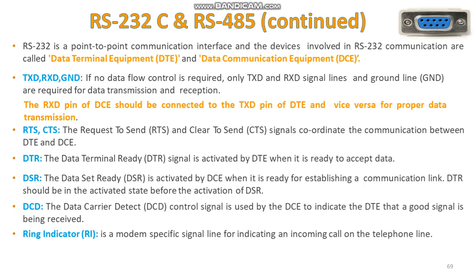RS-232 is a point-to-point communication interface where the devices involved are called the Data Terminal Equipment (DTE) and Data Communication Equipment (DCE). There are different pins for the DB9 and DB25. For TXD, RXD, and ground — if no data flow control is required, these pins are needed for data transmission and reception. The RXD pin of DCE should be connected to the TXD pin of DTE and vice versa for proper transmission.